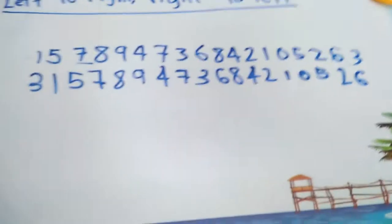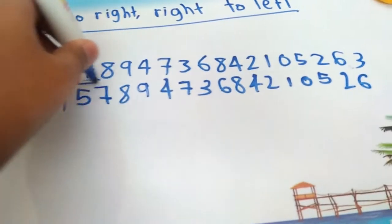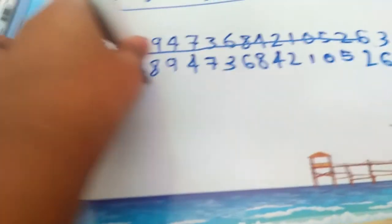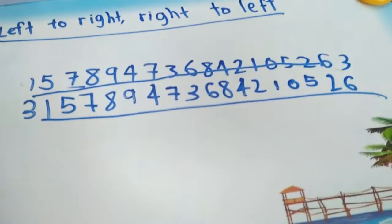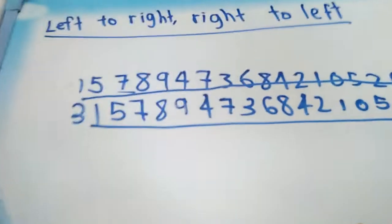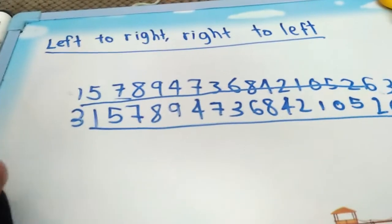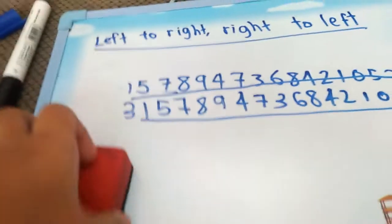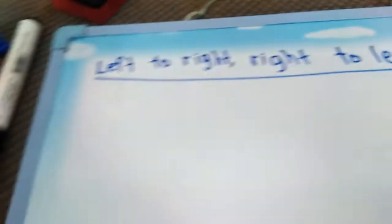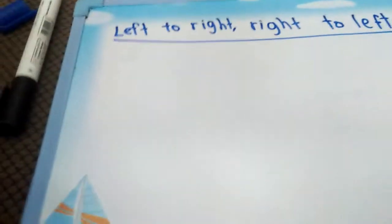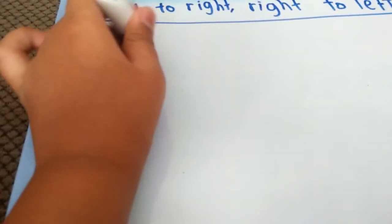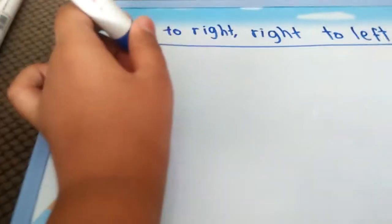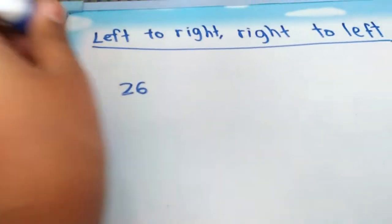This works with the only cyclic number: 5, 2, 6, 3, 1, 5, 7, 8, 9, 4, 7, 3, 6, 8, 4, 2, 1. So here we are finding left to right and right to left. Now let's check 5n, which means our n is 5, 2, 6, 3, 1, 5, 7, 8, 9, 4, 7, 3, 6, 8, 4, 2, 1.